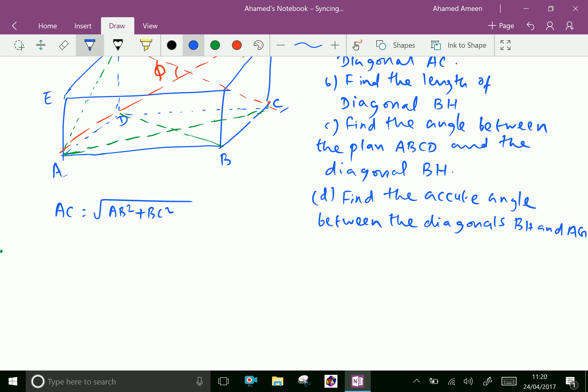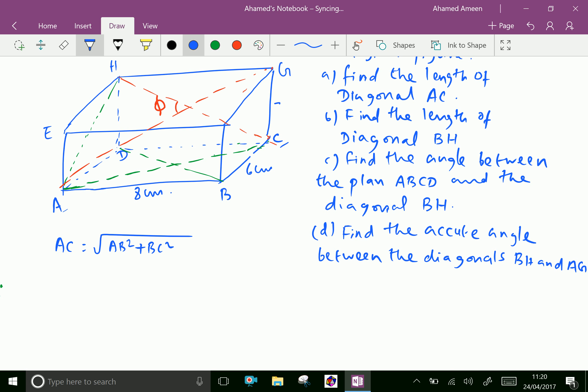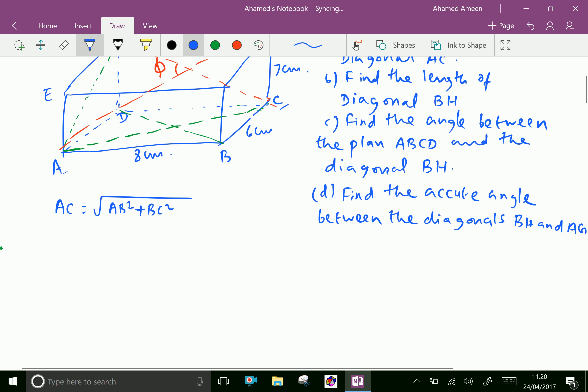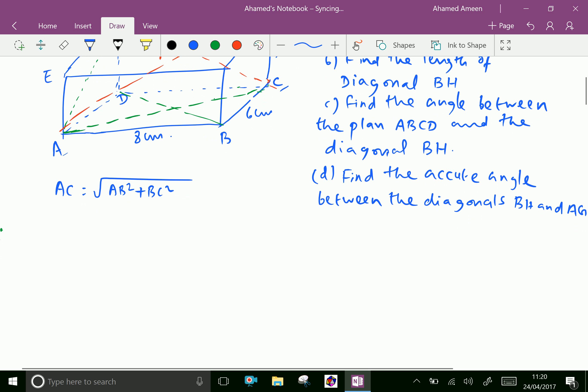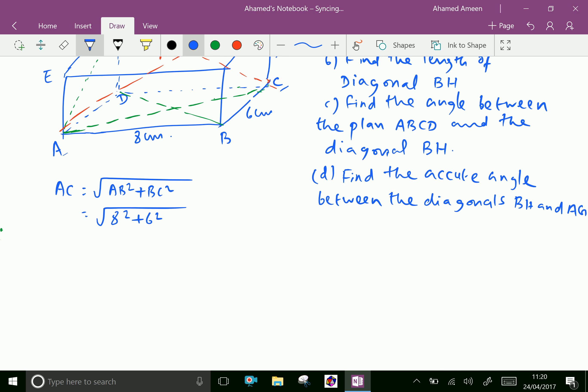Now by Pythagoras theorem, AC equals the square root of 8 squared plus 6 squared, which equals the square root of 64 plus 36, giving us square root of 100, which is equal to 10 centimeters.